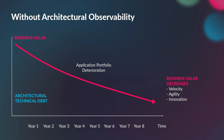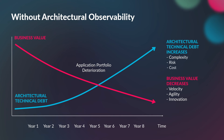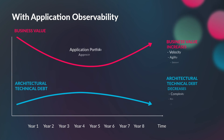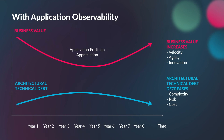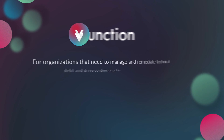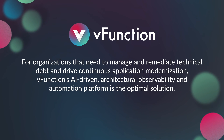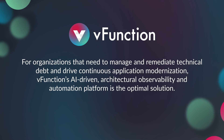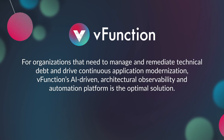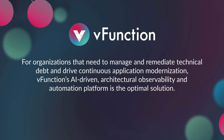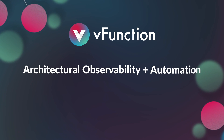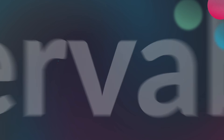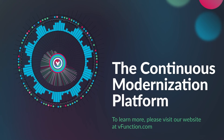Without architectural observability, the value of an application portfolio deteriorates over time as architectural technical debt continues to grow. But with architectural observability, you can reverse this trend by reducing architectural technical debt, increasing business velocity, agility, and innovation. For organizations that need to manage and remediate technical debt and drive continuous application modernization, vFunction's AI-driven architectural observability and automation platform is the optimal solution — because architectural observability plus automation equals transformation. To learn more, please visit our website at vfunction.com.